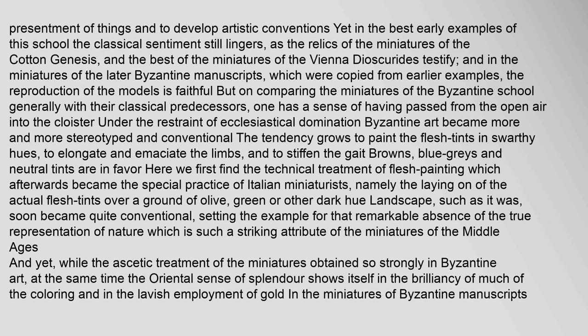Byzantine art became more and more stereotyped and conventional. The tendency grows to paint the flesh tints in swarthy hues, to elongate and emaciate the limbs, and to stiffen the draperies; browns, blue-grays and neutral tints are in favour. Here we first find the technical treatment of flesh painting which afterwards became the special practice of Italian miniaturists — namely the laying on of the actual flesh tints over a ground of olive, green or other dark hue. Landscape soon became quite conventional, setting the example for the remarkable absence of the true representation of nature in the miniatures of the Middle Ages. At the same time the Oriental sense of splendour shows itself in the brilliancy of the colouring and in the lavish employment of gold in Byzantine manuscripts.